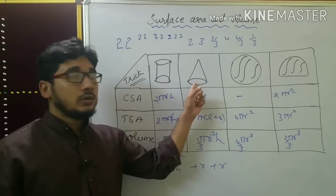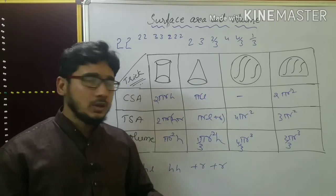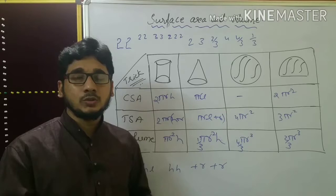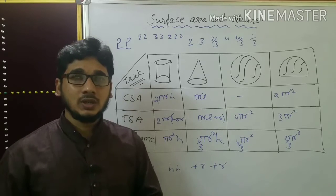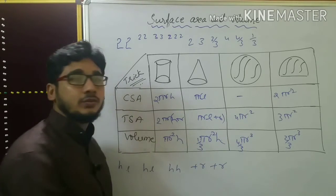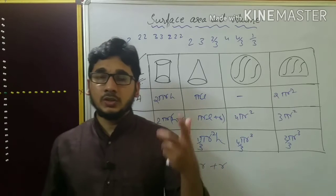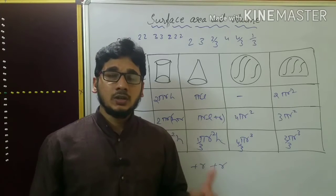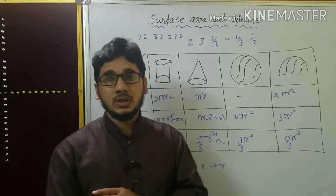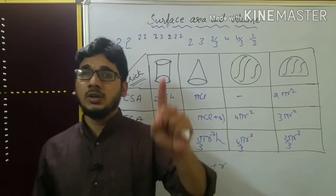After that, the frustum of cone — for that, instead of r you have to write r₁ and r₂, with a small calculation. I will tell that also. Then cube and cuboid — you can write all six formulas there. Altogether you will write all 20 formulas within 50 seconds to one minute.